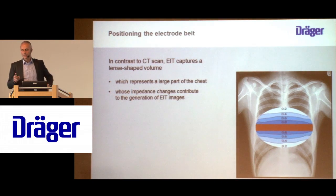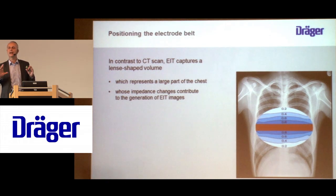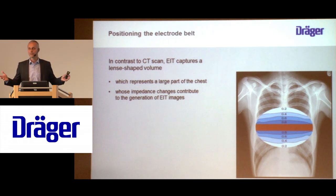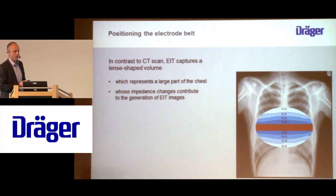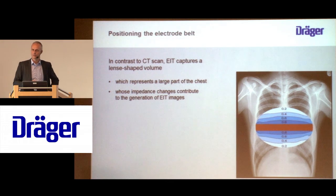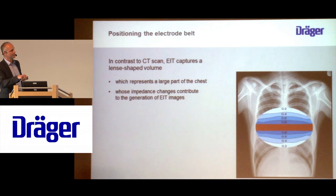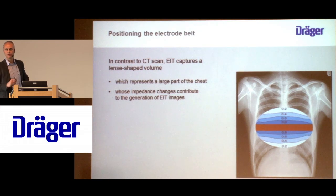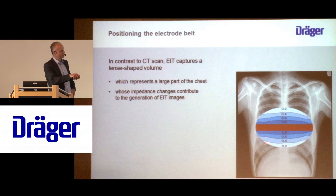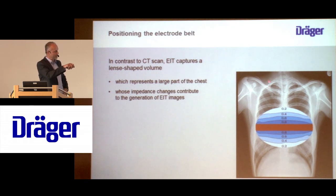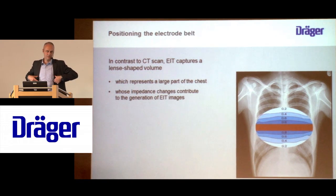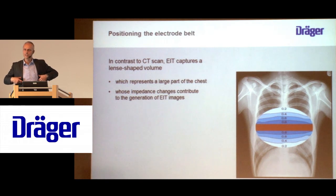As I mentioned, we are capturing a lens-shaped volume. It's really hard to say what percentage of the entire lung we are actually capturing — it depends on chest dimensions and probably also on conductivity, so this information remains somewhat blurry. But if this dimension is maybe 20 centimeters in an adult, and our belt is already about 4 centimeters thick, we should probably assume we capture at least 20–30% with one single image.